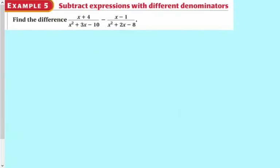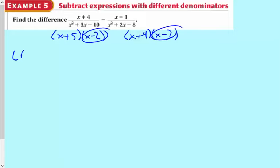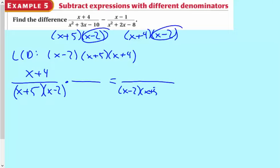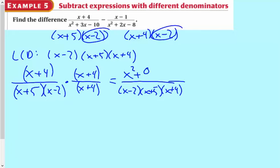Here's another one. I'm going to put this into factored form: x plus 5, x minus 2 — factoring coming up again — and then x plus 4, x minus 2 on the bottom. So they share the x minus 2s. My LCD is going to be x minus 2, and then we have an x plus 5 and an x plus 4. Let's convert our fractions: x plus 4 over x plus 5 times x minus 2, leaving it in factored form on the bottom. We're missing the x plus 4, so I'm going to multiply it by x plus 4 on the top. I have a binomial times a binomial, x plus 4 times x plus 4, which gives me x squared plus 8x plus 16 using FOIL.